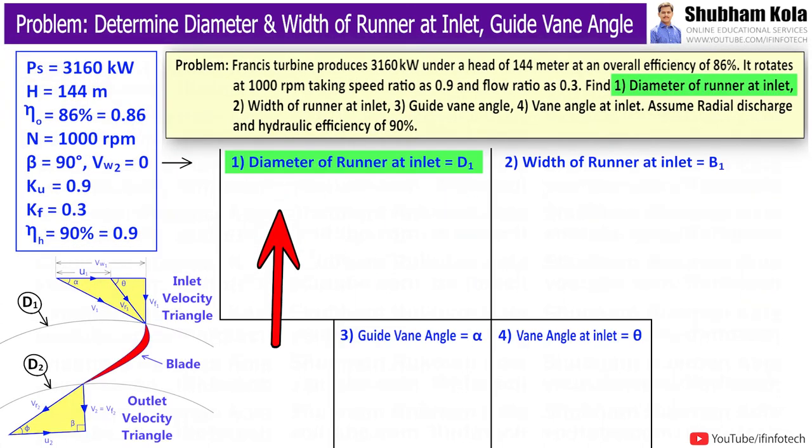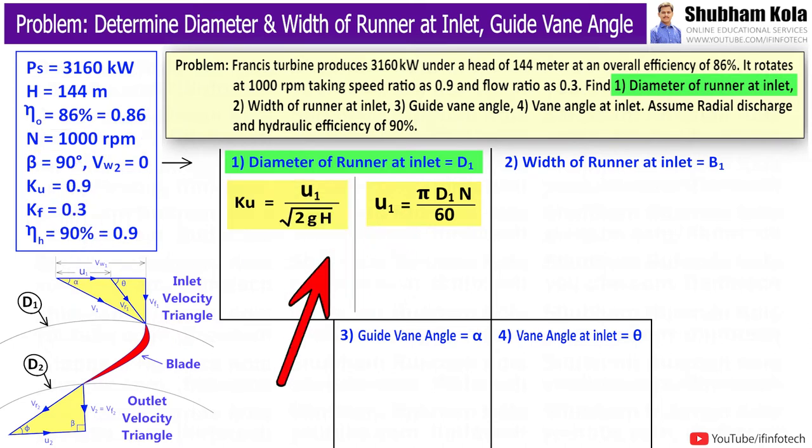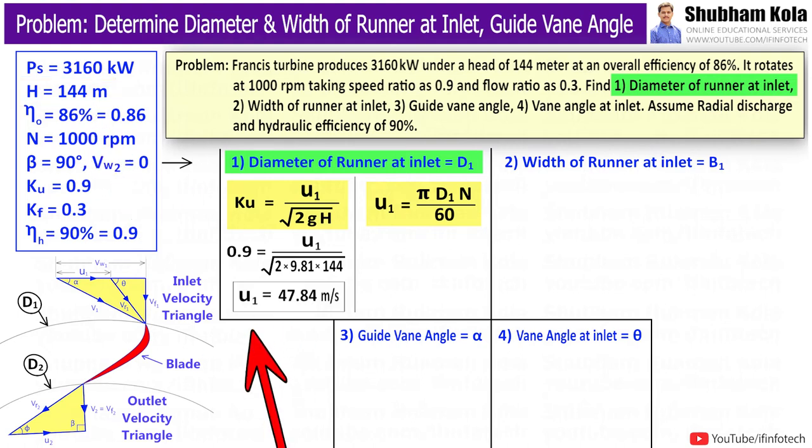In this problem, first we need to find out runner diameter at inlet, denoted as D1. To calculate this value, I will use equation for tangential velocity at inlet, U1, which is given by formula U1 = π D1 N / 60, where we have speed N. We will calculate U1 from equation of speed ratio, Ku = U1 / √(2gH), where H is net head given as 144 m. Therefore, by calculating this, we will get U1 = 47.84 m/s.